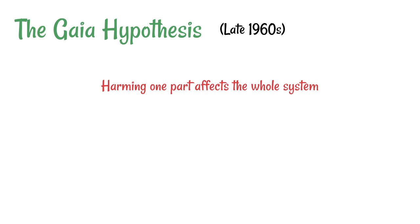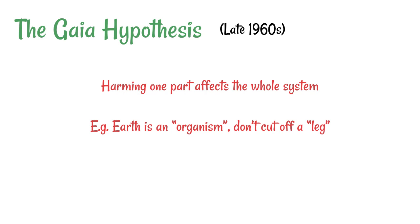The idea is that harming one part affects the whole system. So if the Earth is an organism, you wouldn't cut off a leg — and therefore in the Earth's system, you shouldn't allow things to go extinct. Supporters of the Gaia Hypothesis often refer to it as Gaia Theory. When a scientist uses the word 'theory,' they mean there is a great deal of evidence to support it and they are very confident the idea is accurate. It's certainly open to debate, but this gives some idea of how much support there is for the hypothesis.